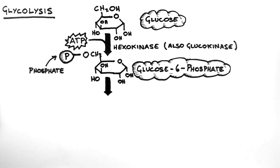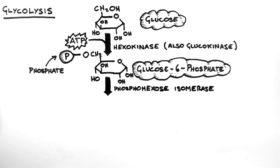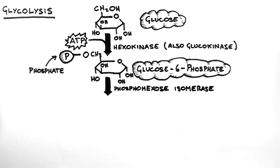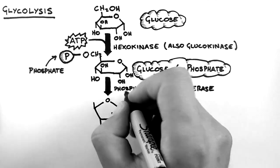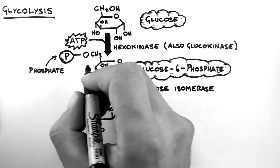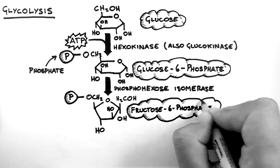The glucose 6-phosphate is acted upon by phosphohexose isomerase. Isomerases are enzymes which rearrange the structure of the substrate without changing the molecular formula. We can see that the phosphohexose isomerase rearranges the glucose 6-phosphate into a fructose 6-phosphate molecule.